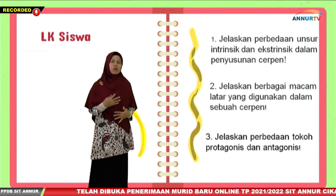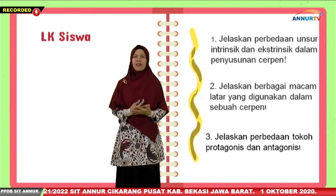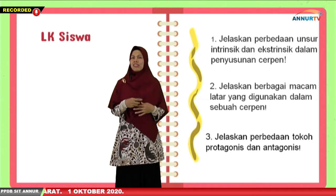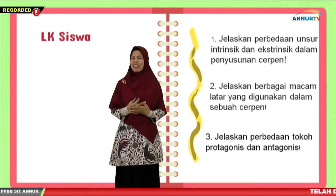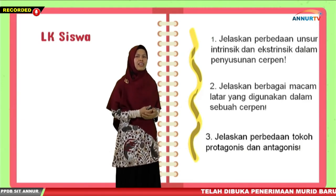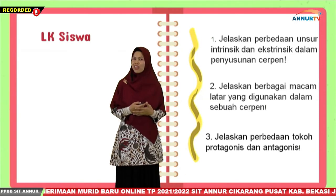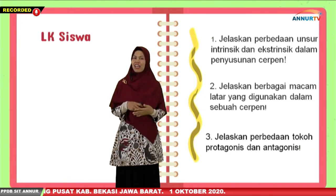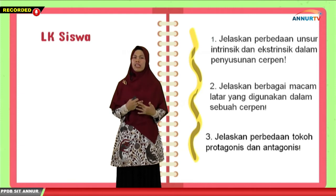Dari tadi unsur pembangun cerpen yang sudah kita bahas, ada LK yang harus dikerjakan. Pertama, kalian menjelaskan perbedaan unsur intrinsik dan unsur ekstrinsik. Kedua, menjelaskan berbagai macam latar yang digunakan dalam sebuah cerpen. Ketiga, menjelaskan perbedaan tokoh protagonis dan tokoh antagonis. Jangan lupa ditulis di buku tulis yang rapi, karena tulisanmu itu mencerminkan kepribadianmu, dan kalau sudah selesai dikirim ke Google Classroom.